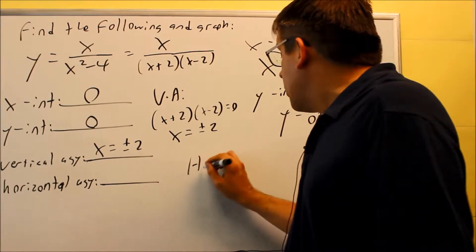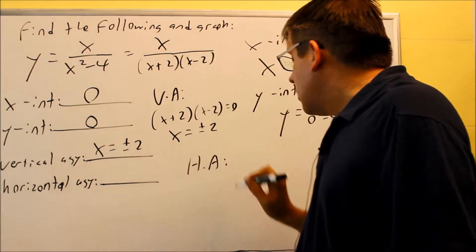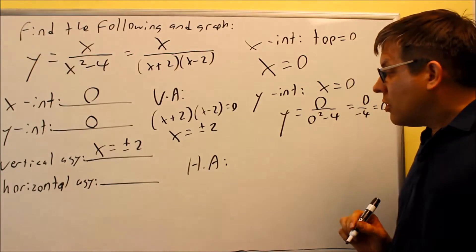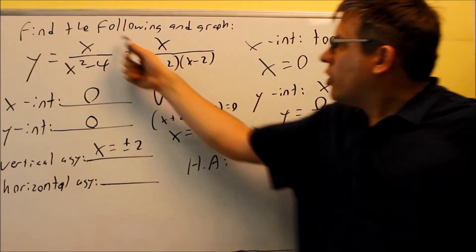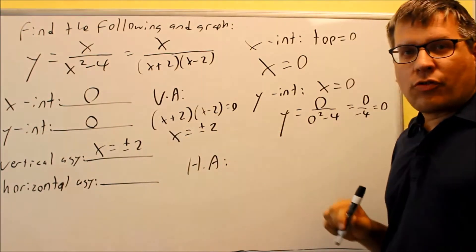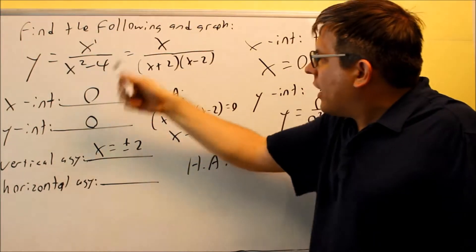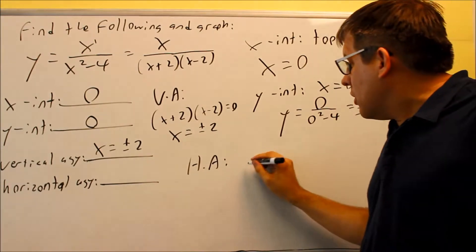Then, the last one we want to do is your horizontal asymptote. So horizontal asymptote, we have to look at those different rules. We always go back to the original one, the non-factored form. Highest power on top is a 1, the highest power on the bottom is 2. So in this case, your N is less than M if you look at the rules in the notes.